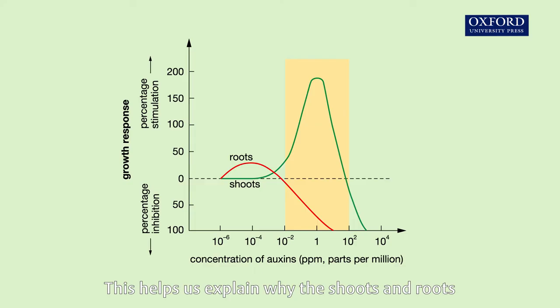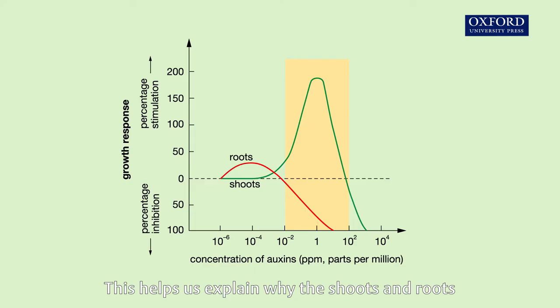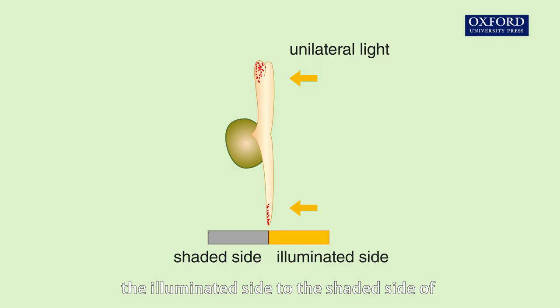This helps us explain why the shoots and roots respond differently to unilateral light. Under unilateral light, auxins move from the illuminated side to the shaded side of the shoot and root.